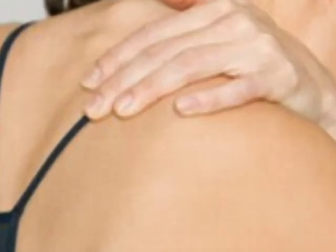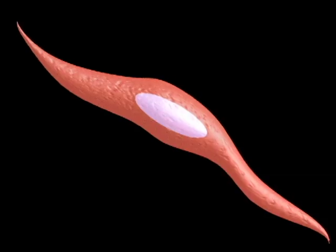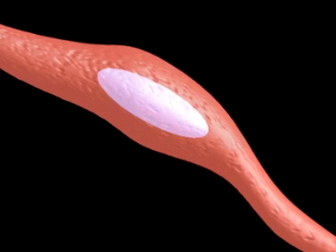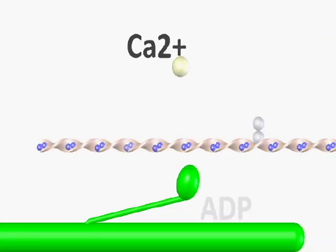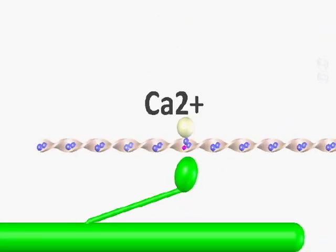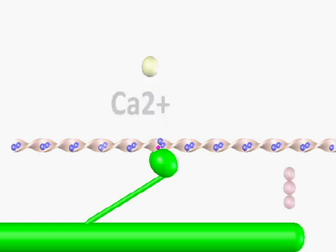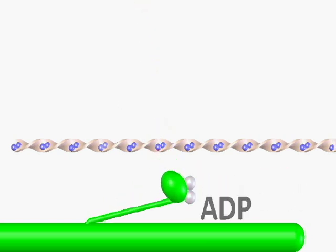Using the sliding filament model, we'll discuss how trigger points are created and how they can be released. Our muscles are made up of long chains of muscle cells called sarcomeres. Here we see a basic representation of parts of a microscopic sarcomere and some chemical reactions working to make a muscle contract.